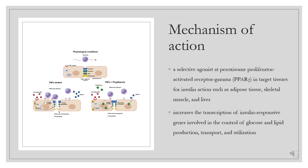Pyoglitazone is a selective agonist at peroxisome proliferator-activated receptor gamma (PPAR) in target tissues for insulin action such as adipose tissue, skeletal muscle, and liver. Activation of PPAR increases the transcription of insulin-responsive genes involved in the control of glucose and lipid production, transport, and utilization. Through this mechanism, pyoglitazone both enhances tissue sensitivity to insulin and reduces the hepatic production of glucose (i.e., gluconeogenesis). Insulin resistance associated with type 2 diabetes mellitus is therefore improved without an increase in insulin secretion by pancreatic beta cells.